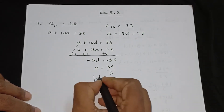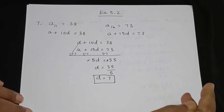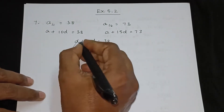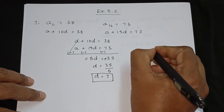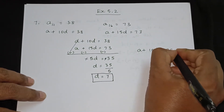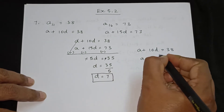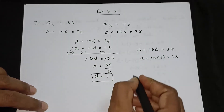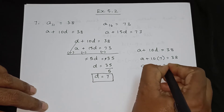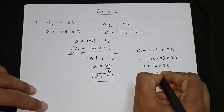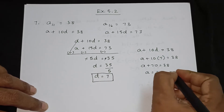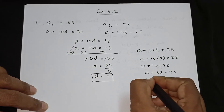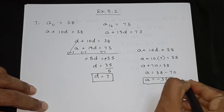Now substituting d equals 7 back into the first equation: a plus 10d is equal to 38, so a plus 10 into 7 is equal to 38, giving a plus 70 is equal to 38. Therefore a is equal to 38 minus 70, which gives a is equal to minus 32.